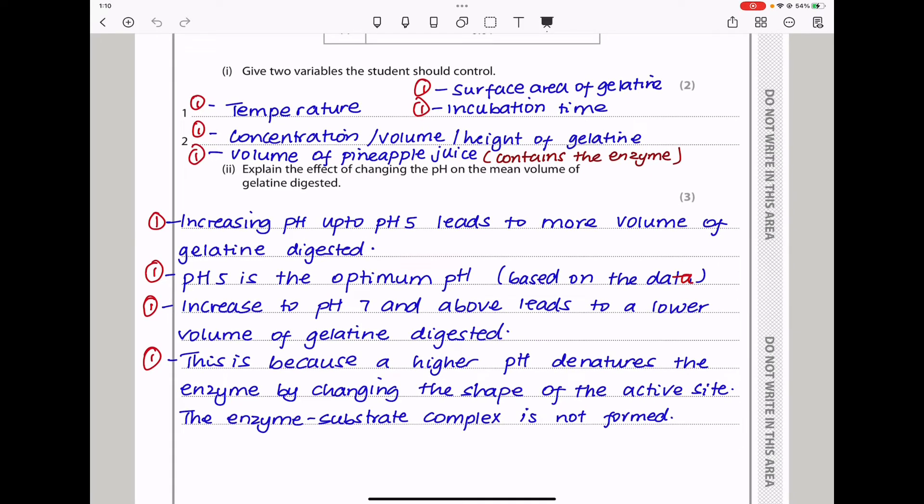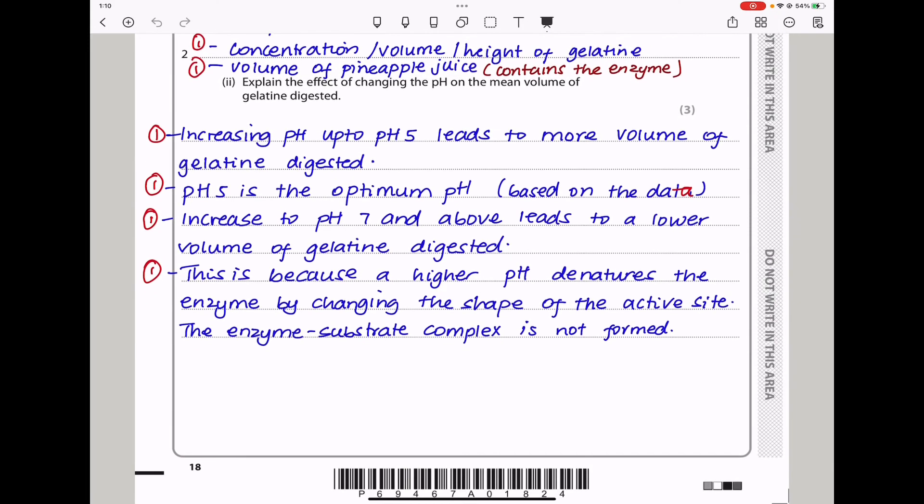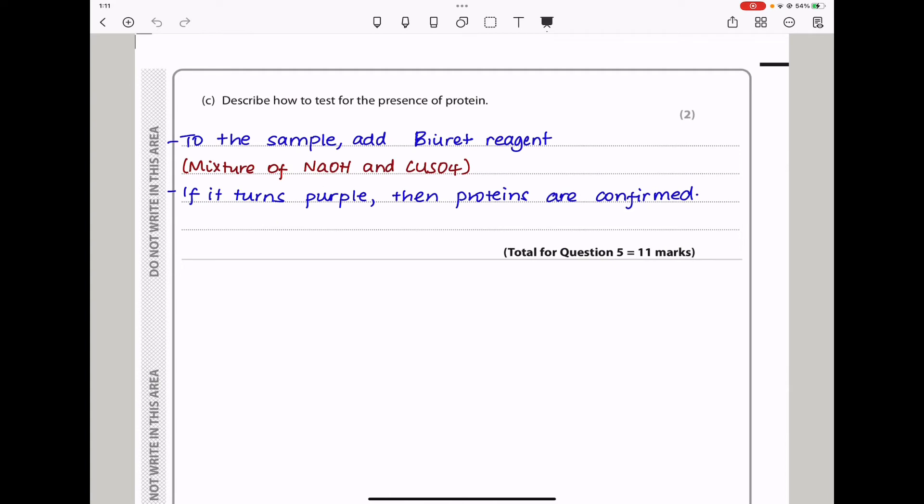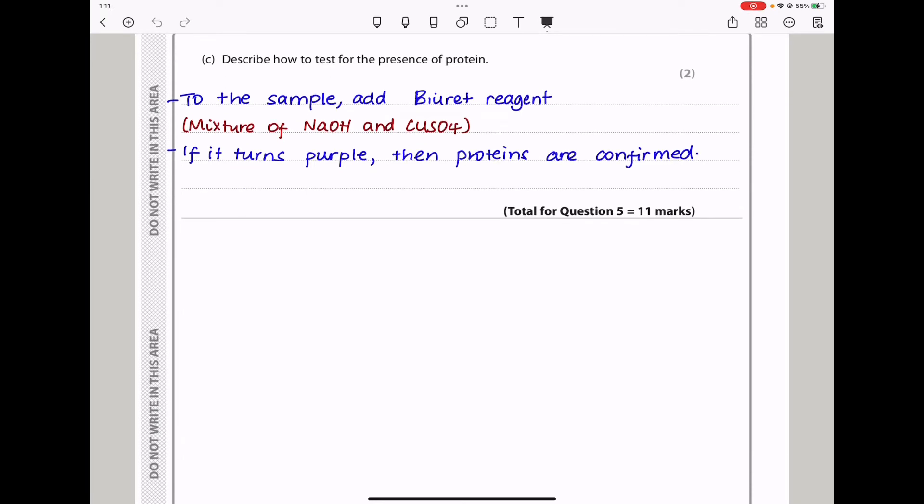And this is because the higher pH denatures the enzymes by changing the shape of the active sites. That means the enzyme substrate complex will not be formed. So digestion will not occur. Describe how to test for the presence of protein. If we are testing for presence of protein, we use Biuret reagent. And the observation will be, if it turns purple, then proteins can be confirmed. This brings us to the end of question 5.